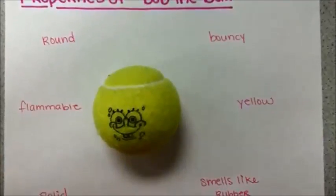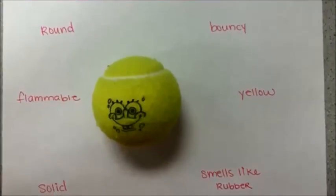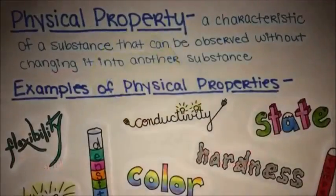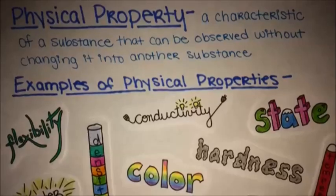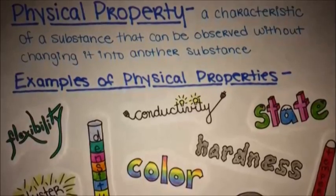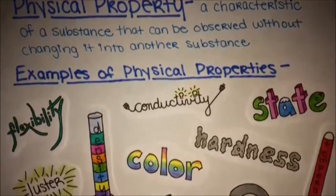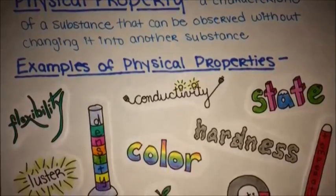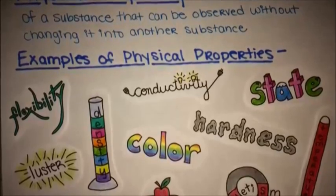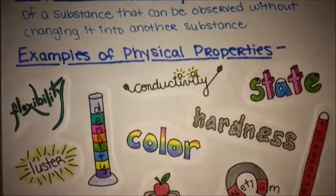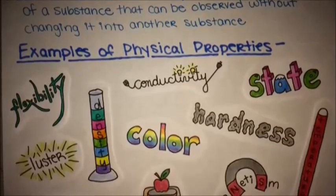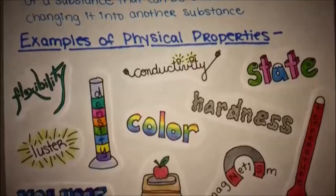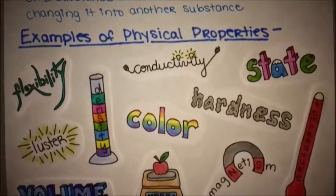Every form of matter has two kinds of properties: physical properties and chemical properties. A physical property is a characteristic of a substance that can be observed without changing it into another substance. Examples of physical properties include state, color, mass, volume, density, magnetism, conductivity, or the ability to insulate.